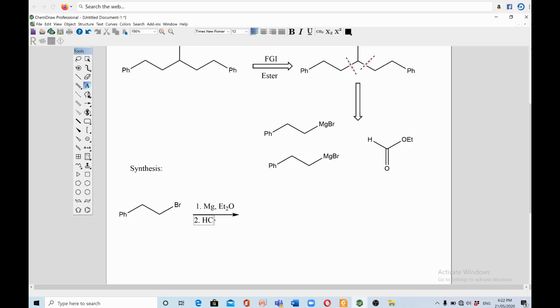So in the first step we need an alkyl halide and magnesium. I'm writing Et group, that is ethyl group. So in step one this will make the Grignard reagent.